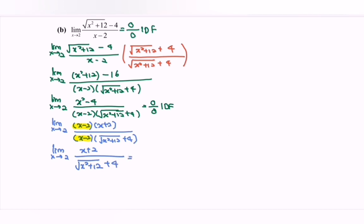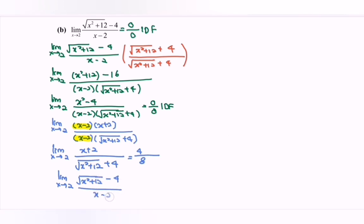Substituting the value 2: we have 4 over — substituting 2 gives 16, square root of 16 is 4, then 4 plus 4 equals 8. So the limit as x approaches 2 of (√(x²+12) − 4)/(x − 2) equals 1/2.